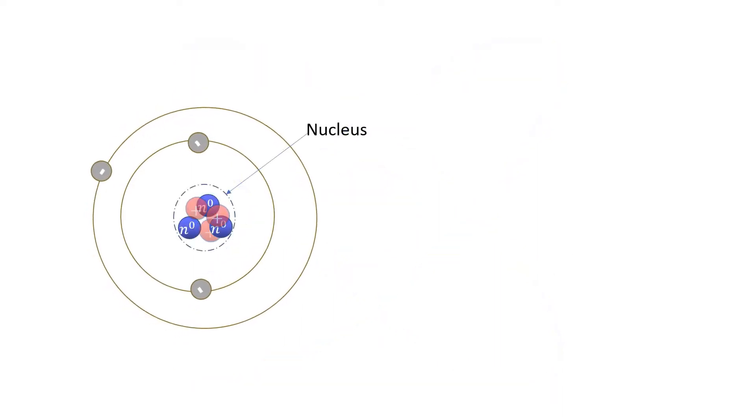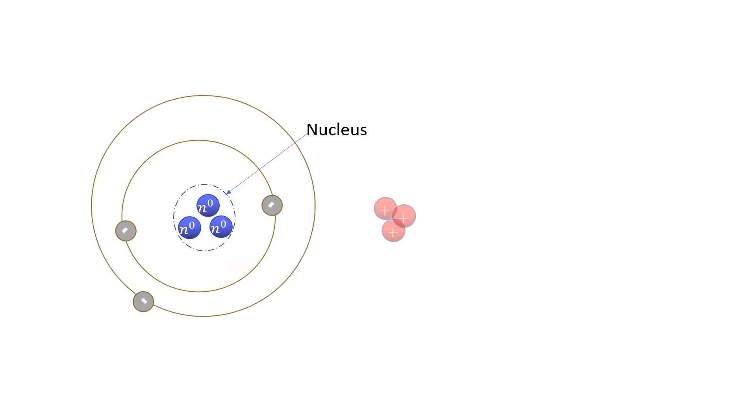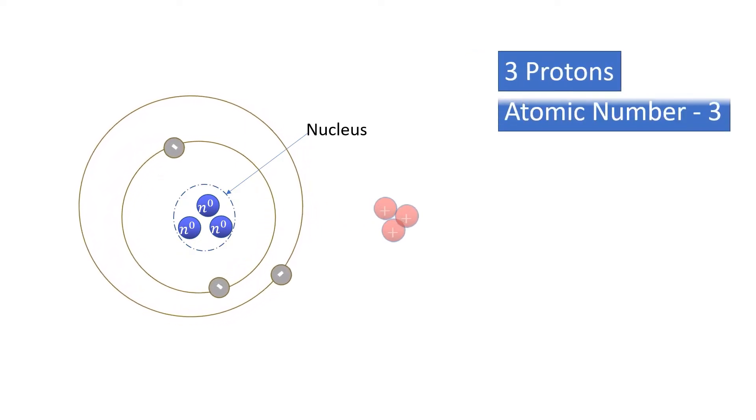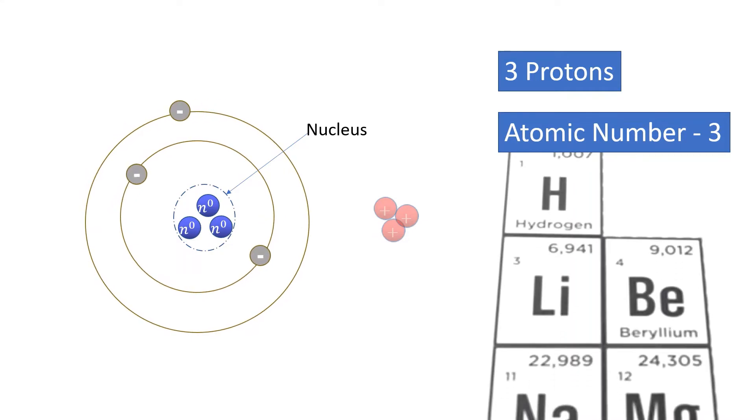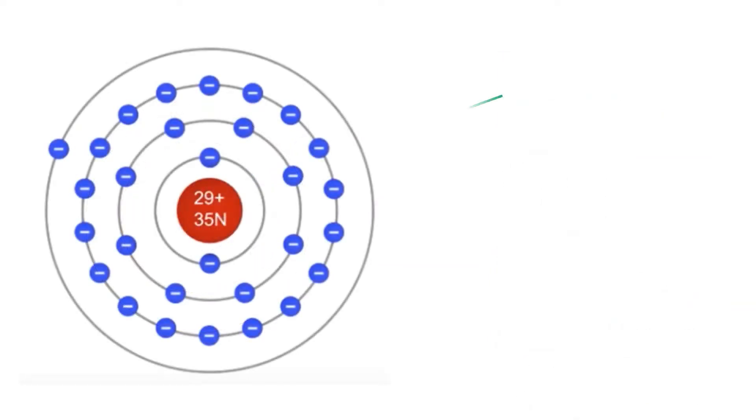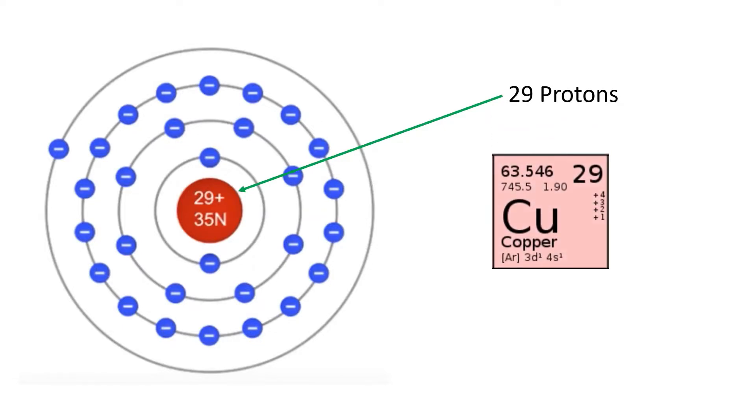The number of protons in the nucleus is defined as the atomic number of an element, and it also defines to which chemical element the atom belongs to. For example, any atom that contains 29 protons is always copper.